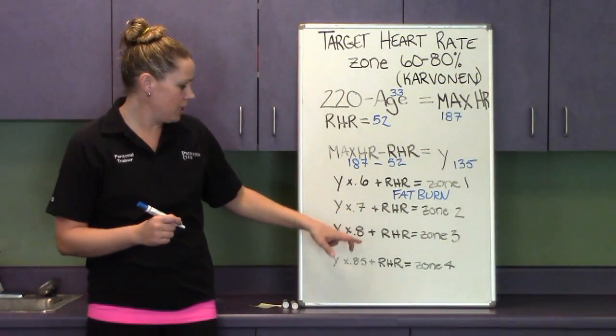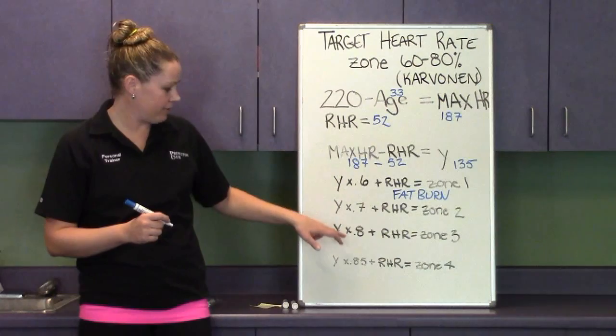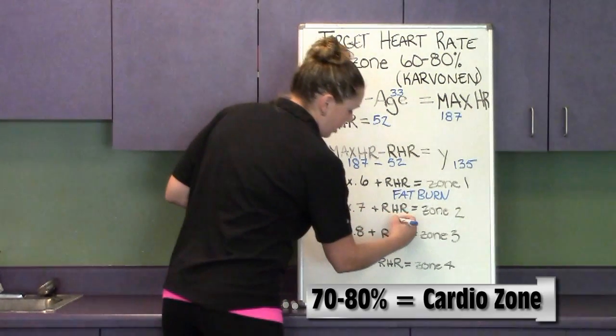Between zone two and three, which is 70 to 80 percent, is going to be your cardio zone.